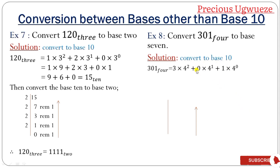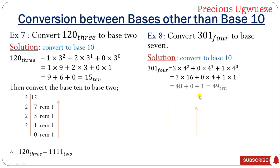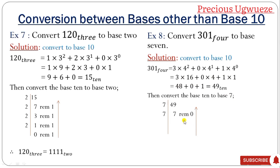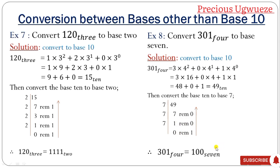Another example: convert 301 base 4 to base 7. First expand to base 10: positions are 0, 1, 2, so 3 times 4² plus 0 times 4¹ plus 1 times 4⁰. Simplifying: 4² is 16, 4¹ is 4, 4⁰ is 1. This gives 48 plus 0 plus 1 equals 49 base 10. Then divide 49 successively by 7: 7 remainder 0, 1 remainder 0, 0 remainder 1. Reading remainders from bottom to top gives 100 base 7.